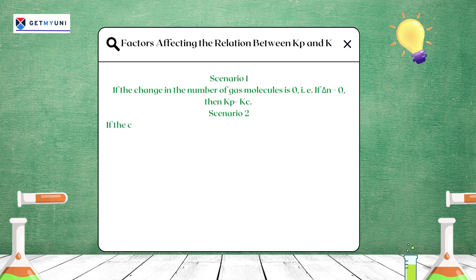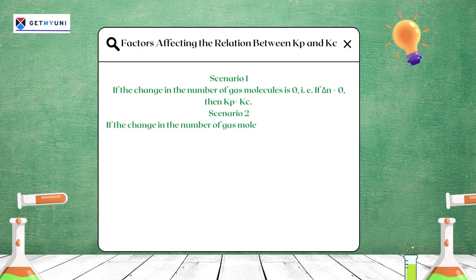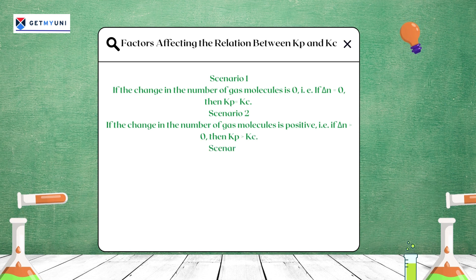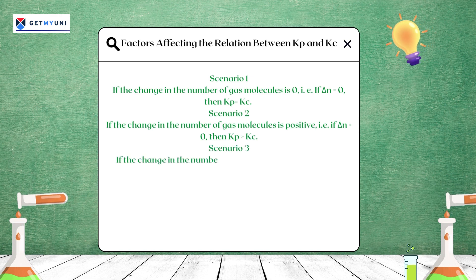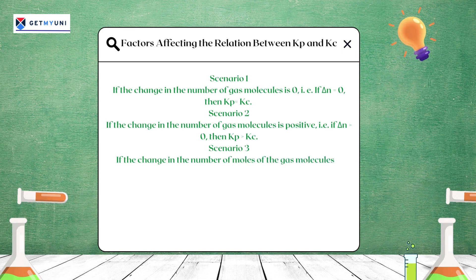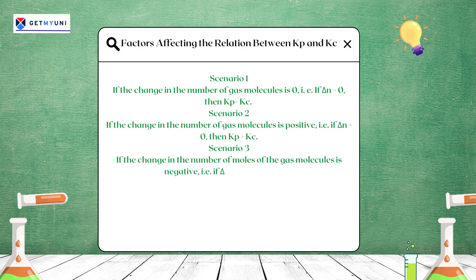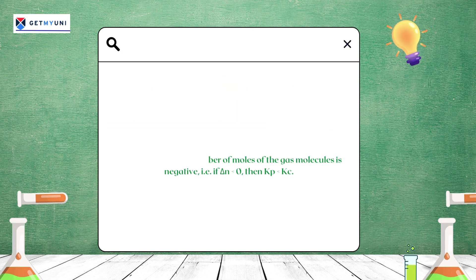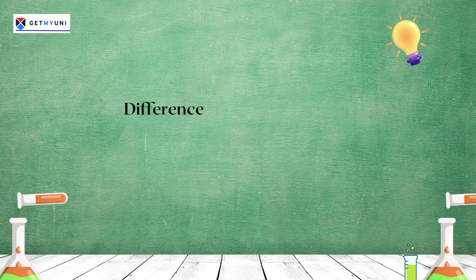Scenario 1: If the change in the number of gas molecules is zero (Δn = 0), then Kp = Kc. Scenario 2: If the change in the number of gas molecules is positive (Δn > 0), then Kp > Kc. Scenario 3: If the change in the number of moles of gas molecules is negative (Δn < 0), then Kp < Kc.